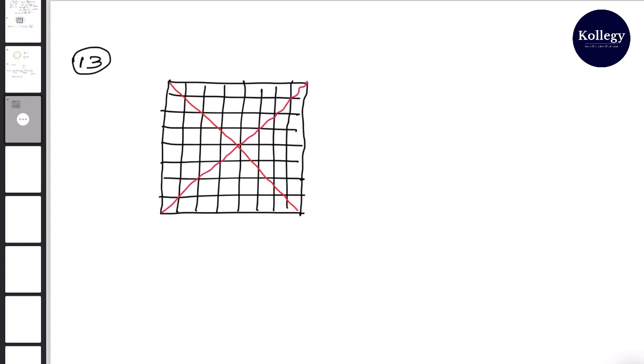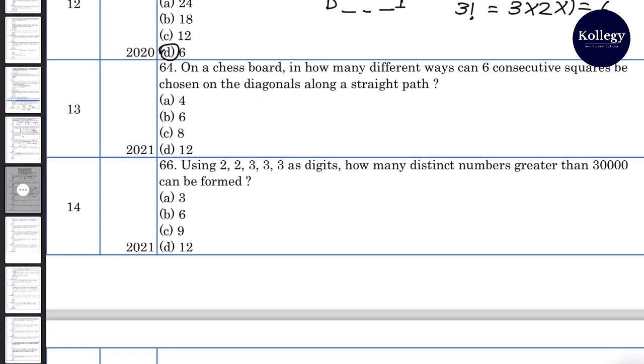And there are 2 diagonals. So along diagonals, 6 consecutive squares can be chosen in how many ways? First can be this, second this, third can be from here to here, from here to here and from here to here, 4. And 5th can be from here to here, and from here to here. So total 6 possibilities are formed in which we can choose 6 consecutive squares diagonal along. So 13th answer is 6.